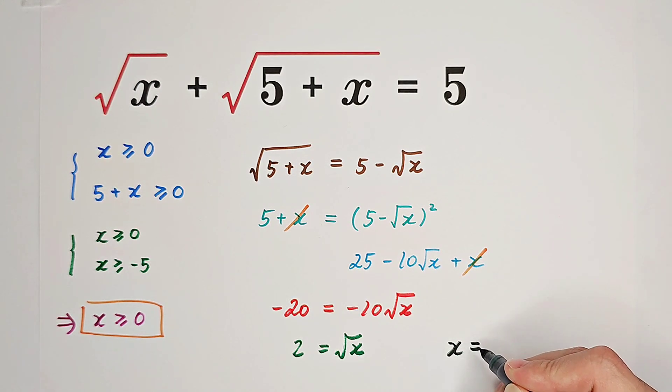Or you can square both sides and get x equals 2 squared equals 4. So the answer is x equals 4.